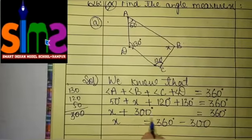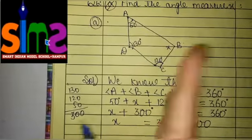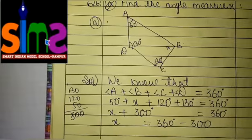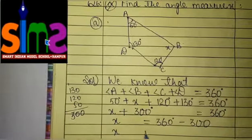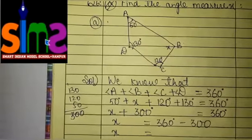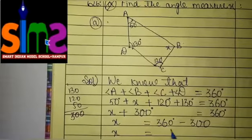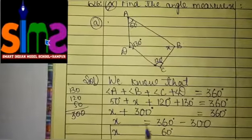As you know that when we shift a number from one side to another side, its sign got changed. So the value of X is 360 minus 300 means 60 degree is our answer.